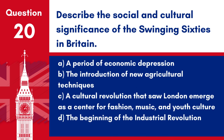Question 20: Describe the social and cultural significance of the swinging 60s in Britain. a. A period of economic depression. b. The introduction of new agricultural techniques. c. A cultural revolution that saw London emerge as a center for fashion, music, and youth culture. d. The beginning of the Industrial Revolution. Answer: c. The swinging 60s represented a time of significant social and cultural change in Britain, influencing trends worldwide, and marking London as a vibrant hub of the modern youth culture.